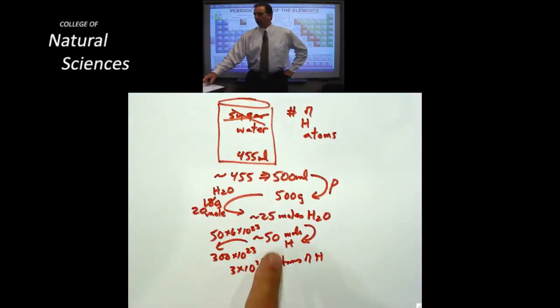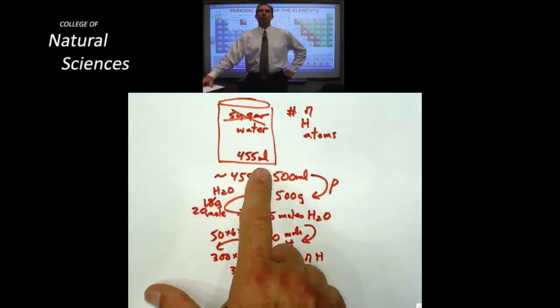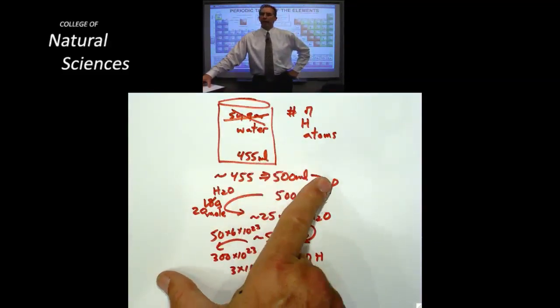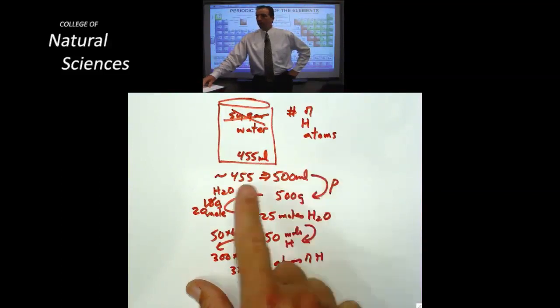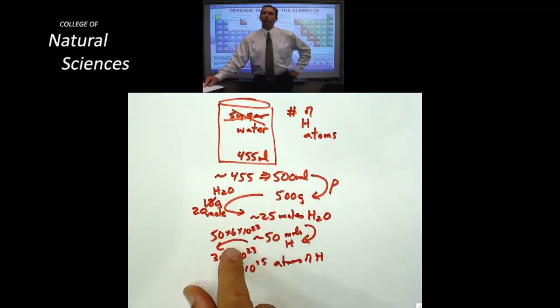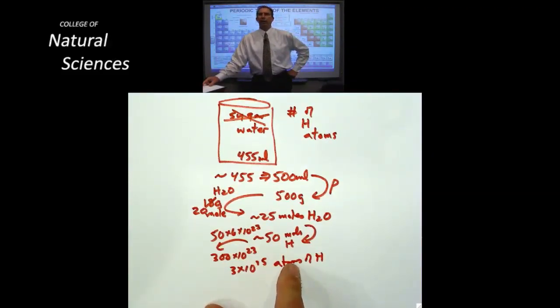I did it by starting off with something I could measure. Actually they had it written on the label. A volume. And I went through a series of conversions volume into mass and then mass into moles. And then I went through the compositional stoichiometry and then came out the other side converting moles into Avogadro's number and I had my answer.